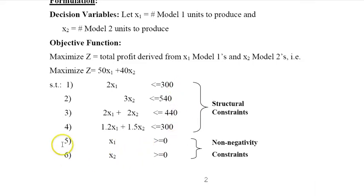I also need another condition called the non-negativity constraints, which means I cannot produce negative number of snowmobiles. So x1 should be greater or equal to zero and x2 should be greater or equal to zero.